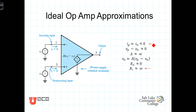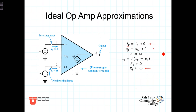The third approximation is that the voltage difference V2 minus V1 — also referred to as V sub P (the voltage at the non-inverting terminal) minus V sub N (the voltage at the inverting terminal) — is very, very small relative to the voltages in the surrounding circuit when operating in its linear mode. So we say they are approximately equal, or that V sub P minus V sub N equals zero.